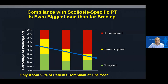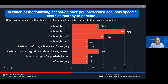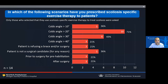Compliance is an issue for Schroth as well. A study by Prachi and Kelly showed that even in a very engaged group of patients in New York City, only about 25% of patients continue doing Schroth one year later. However, in the compliant group, there was a small decrease in curve, compared to about a four or five degree increase in the non-compliant group. Just like bracing, just like taking blood pressure medicine, compliance matters. Prescribing patterns for scoliosis-specific physical therapy vary widely.